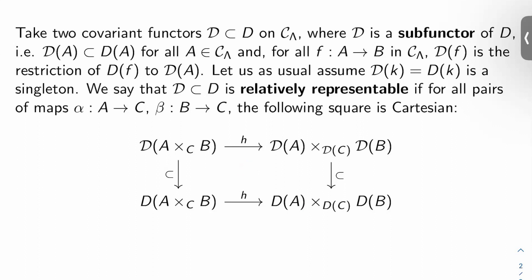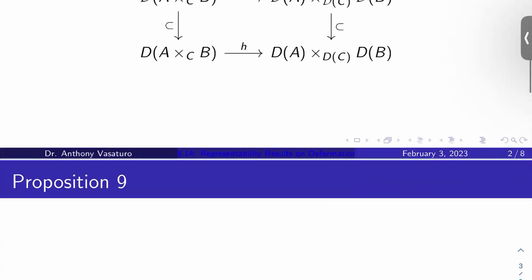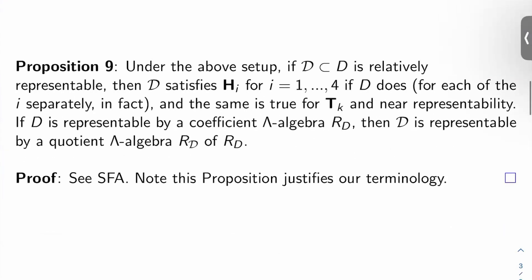So its representability is essentially relative to the functor D. And we're going to justify that terminology right now with the proposition. So proposition 9, under the above setup, if script D in D is relatively representable, and script D satisfies the properties H sub I for I equals 1 through 4 from Schlesinger's theorem from last video, if D does. For each of the I separately, in fact.